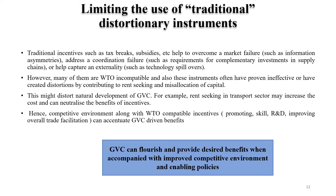Traditional incentives such as tax breaks and subsidies actually help countries to overcome market failure and even address coordination failure. Many countries have policies to develop the SME sectors as supplying sectors connecting to some global value chain through different kinds of subsidy structures. Many of these subsidies are WTO incompatible, and hence there is a need to understand how we can actually allocate capital for developing this sector further.